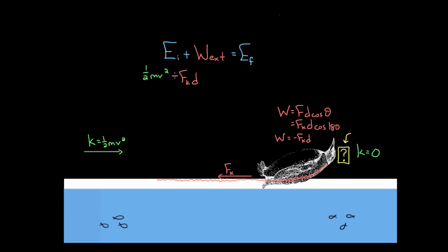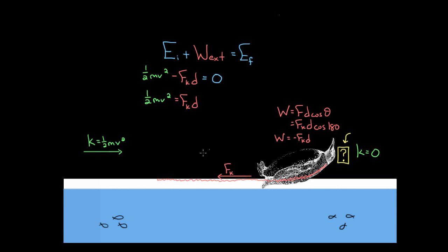So we'd have a minus FkD — negative again because this force is taking energy out of the system. We could set that equal to the final energy, but Walter ends with no kinetic energy, so there's no final energy in our system. In which case we find out that one half mv squared — the initial kinetic energy Walter started with — has to equal FkD, the magnitude of the work done by friction.